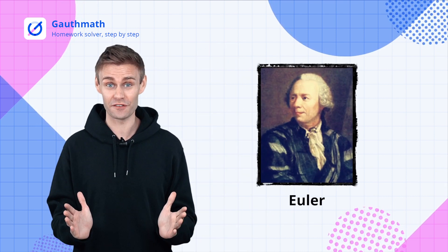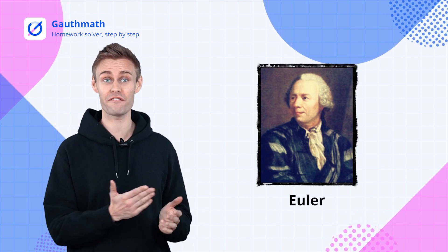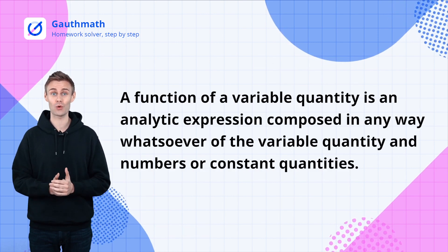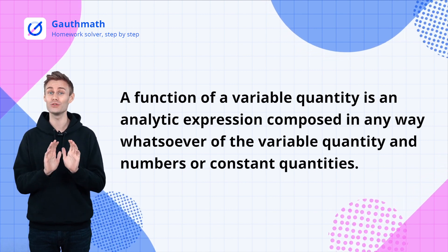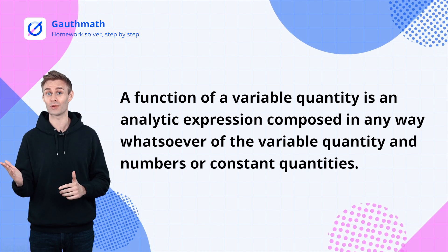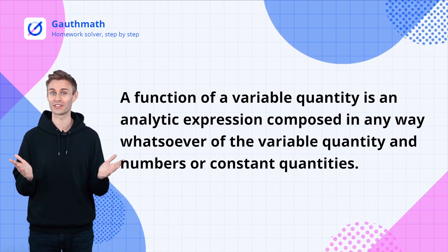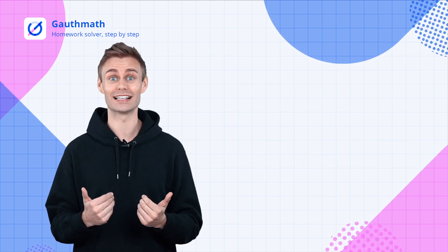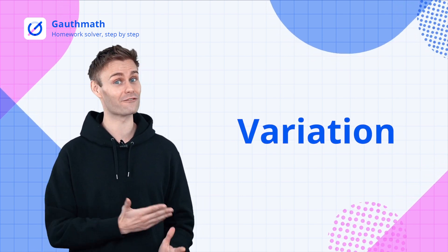In 1755, the famous mathematician Euler defined the function as: 'A function of a variable quantity is an analytic expression composed in any way whatsoever of the variable quantity and numbers or constant quantities.' In his definition, formula is less important while variation was emphasized.